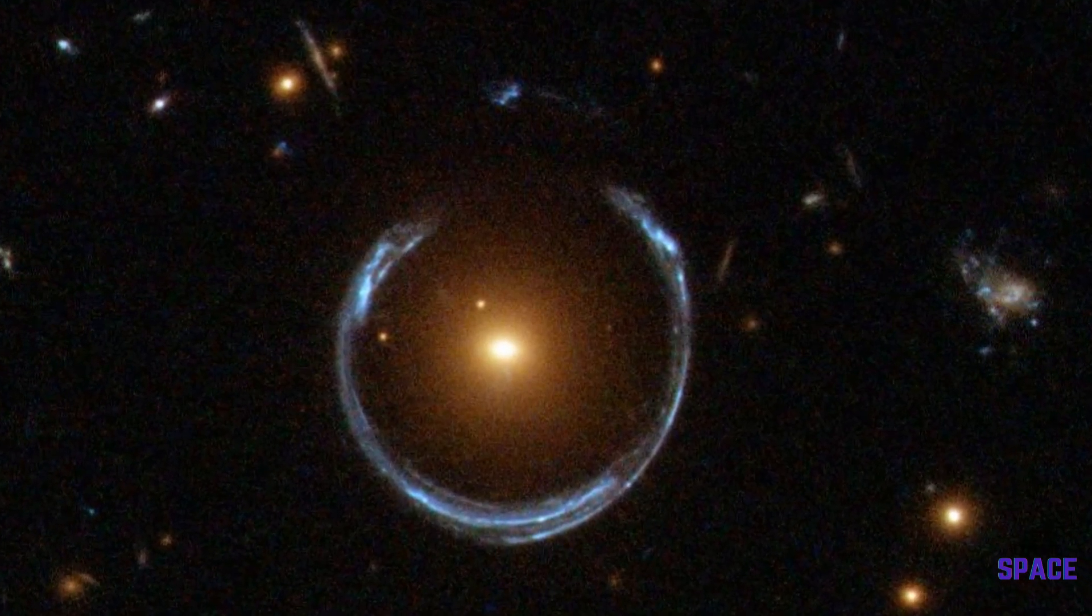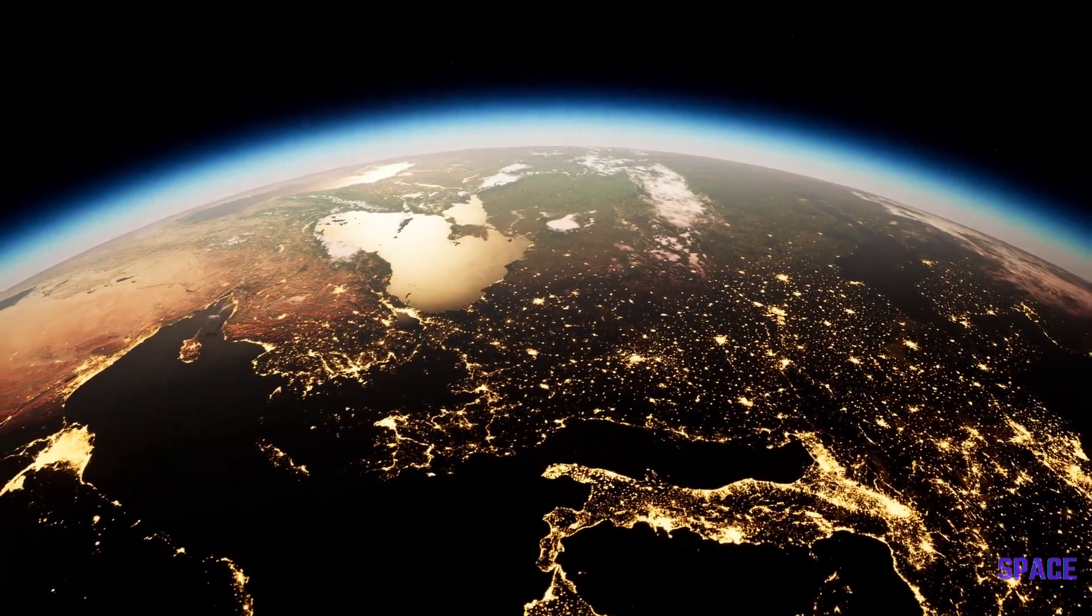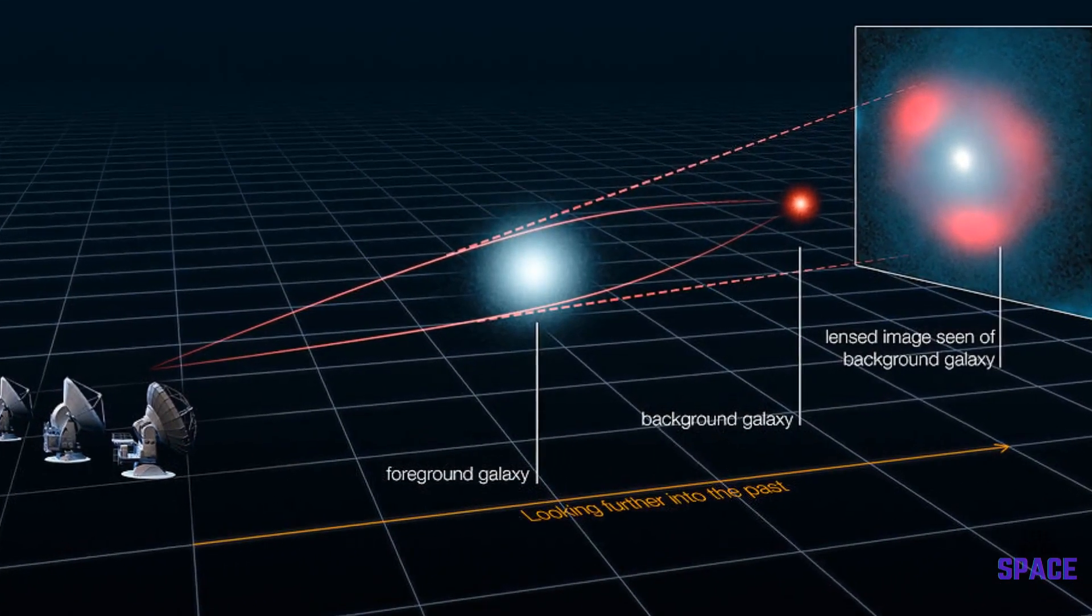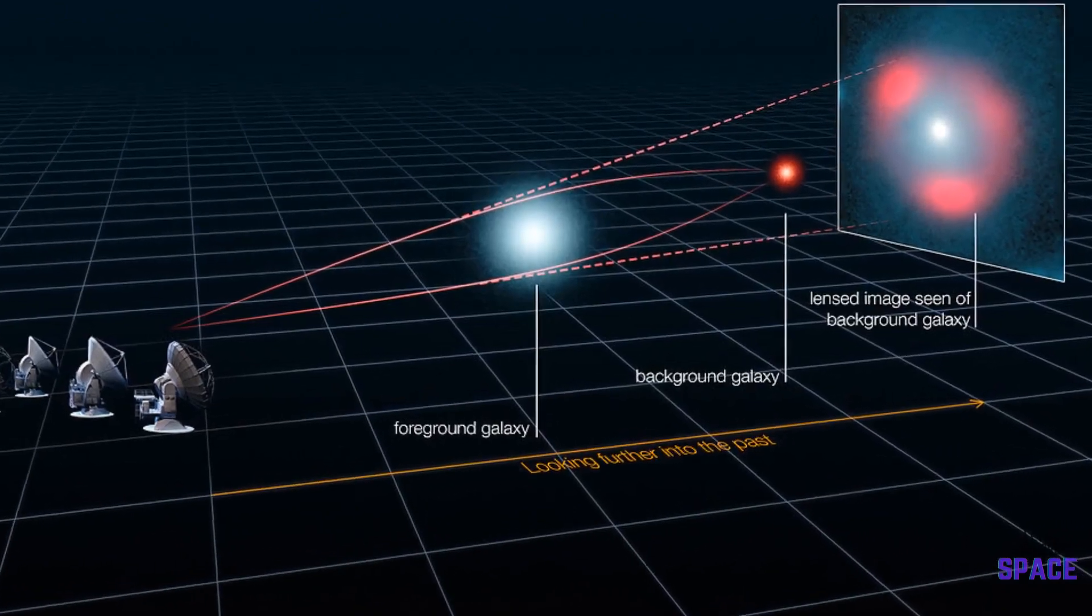On average, the gravitational field of a neutron star is about 200 billion times stronger than that of the Earth. This means that we can actually see the backside of the star that we would not normally be able to see.